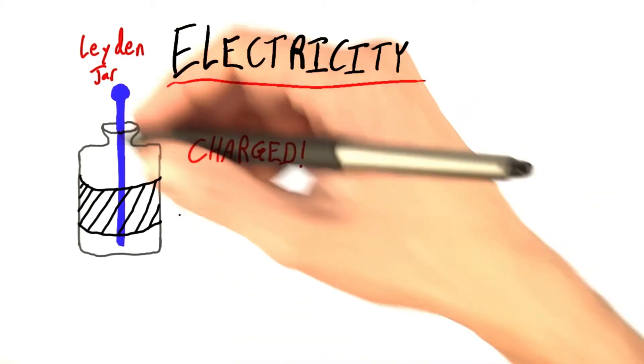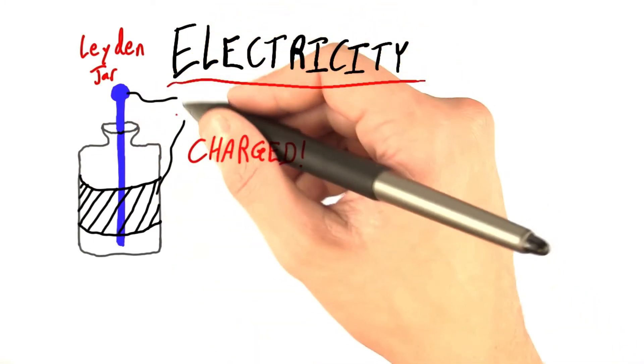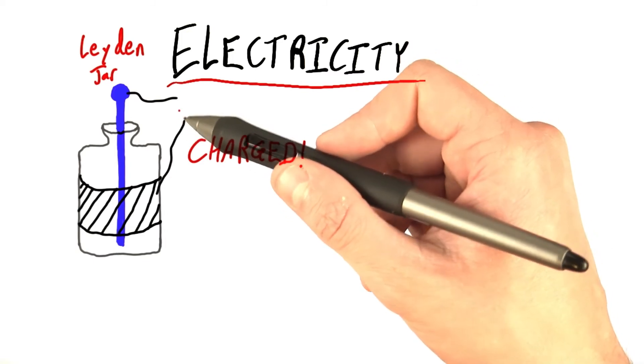Once it was charged, the electrodes of this jar could be connected to wires, and by attaching these wires to various objects, you could see things like sparks, or you could even start a fire.